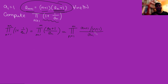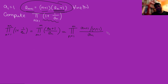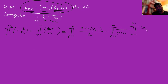What's quite nice about products and multiplication is that it's commutative — the order doesn't matter. So in a way, I can strip out all the (n+1) terms and write this as a product of two products: the product from n=1 to m of 1/(n+1), multiplied by the product from n=1 to m of a_{n+1}/a_n.